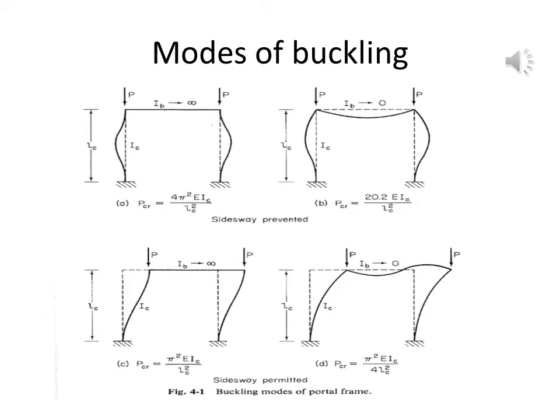First, we have to study about the modes of buckling. There are four types of modes of failures in frames. I have drawn this already in order to save time. These are all the four modes of buckling of frames. Two are based on sidseway prevented and two are based on sidseway permitted. We have to find out the critical load responsible for these modes of failures, for which we have to deal with some equations and derivations.